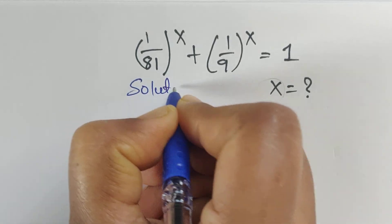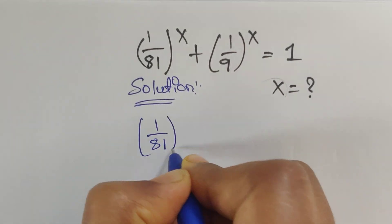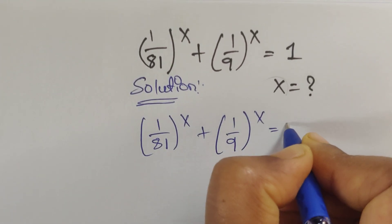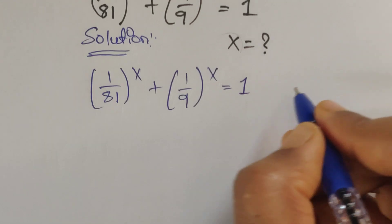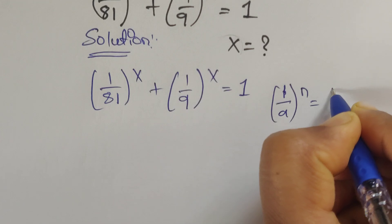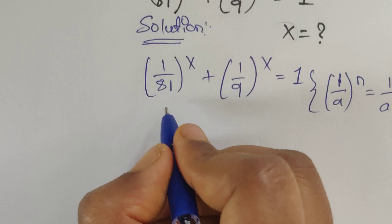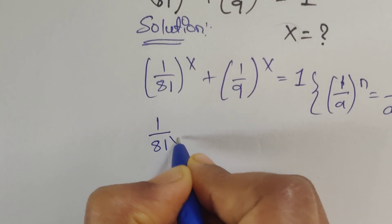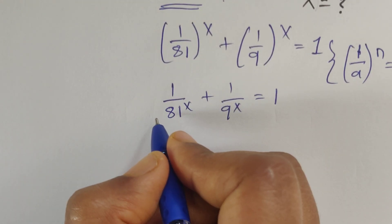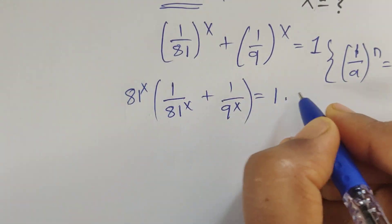Solution. We have given 1 by 81 to the power of x plus 1 by 9 to the power of x equal to 1. Now here we can apply this formula. Now multiply by 81 to the power of x on both sides.